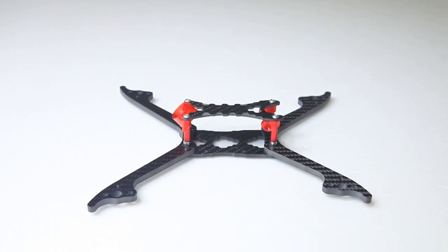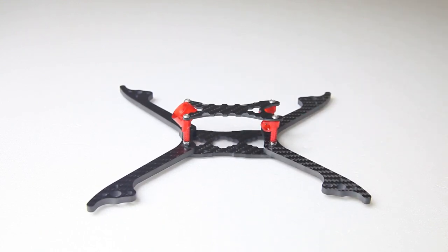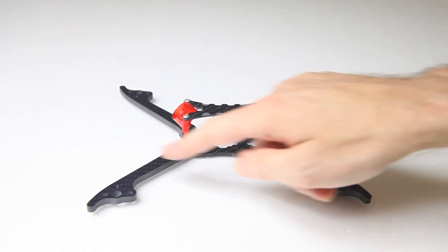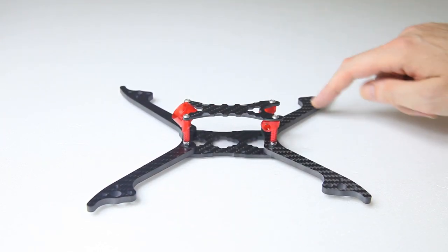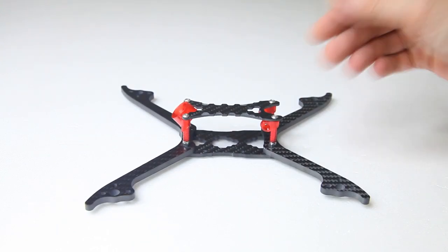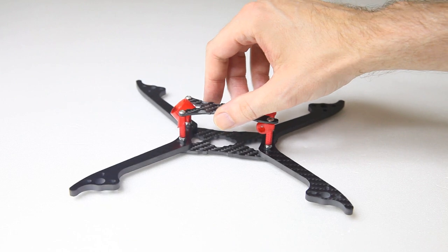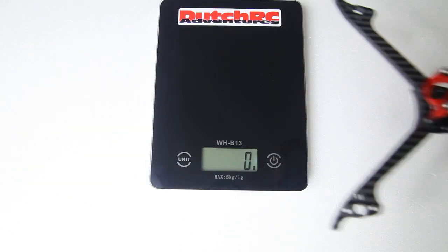If you'd want to build this frame as a 5 inch per se, so not a hybrid, you'd have to order it with two front arms. The front arm is 5 inch, the rear arm is 6 inch. So if you don't want a hybrid frame you'll have to order up an extra front arm and then you can build it as a normal conventional 5 inch.